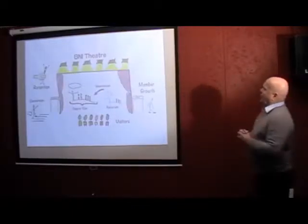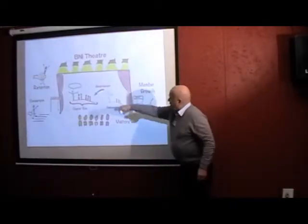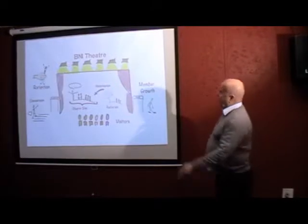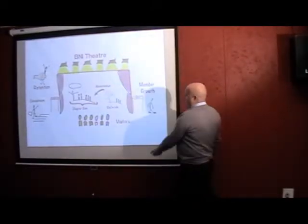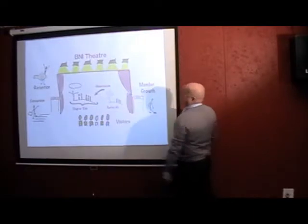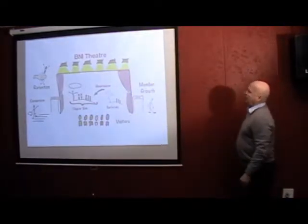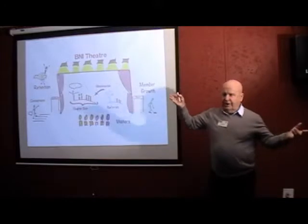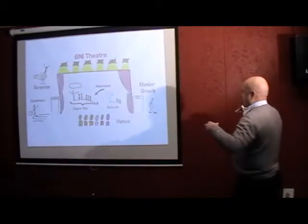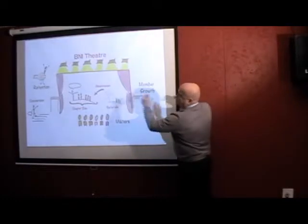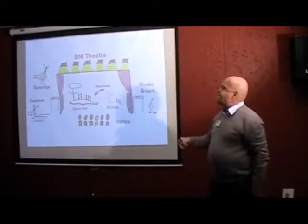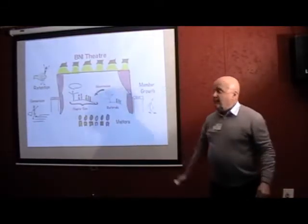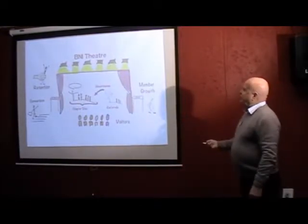Putting this into what we call the BNI theatre, we meet every week, and we invite visitors to attend and observe, and hopefully encourage them to convert to members. So the number of visitors, and the number of people we manage to convert to members. Offset by, regrettably, people leaving the network for whatever reasons. So members join us, and then they leave. So we measure the difference, and we measure how this network is growing, and we also measure how we manage to retain members. So those are the seven criteria.